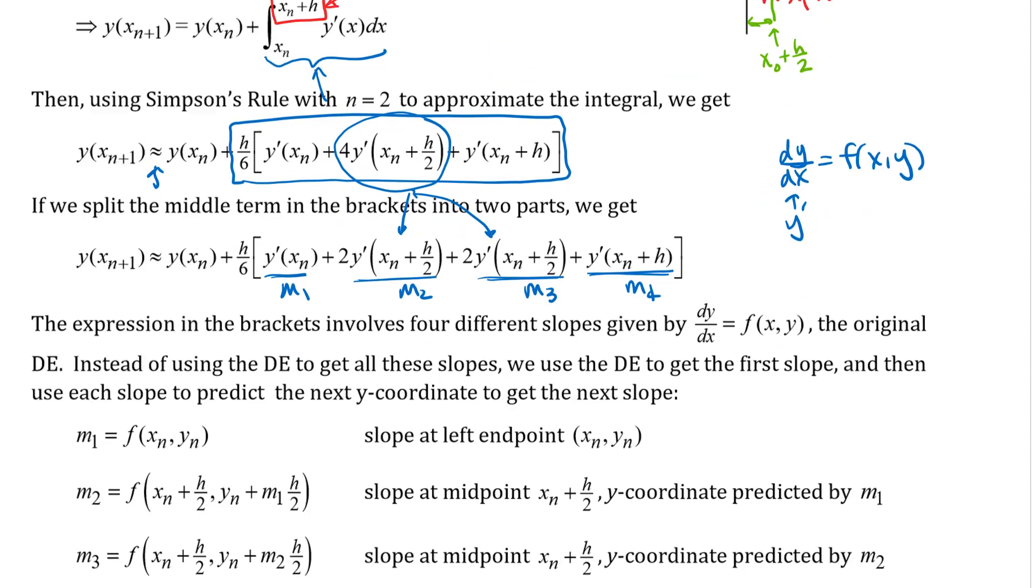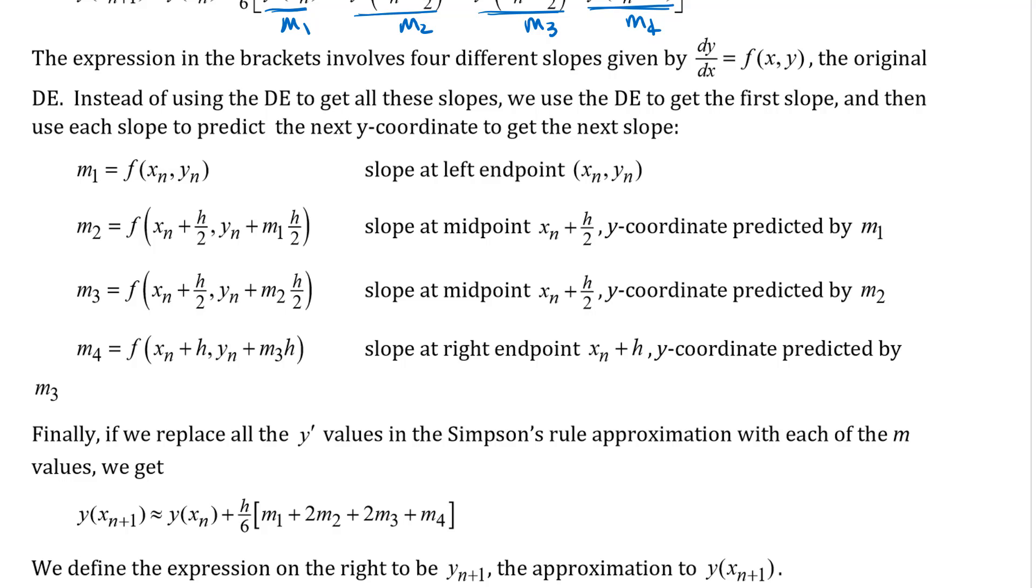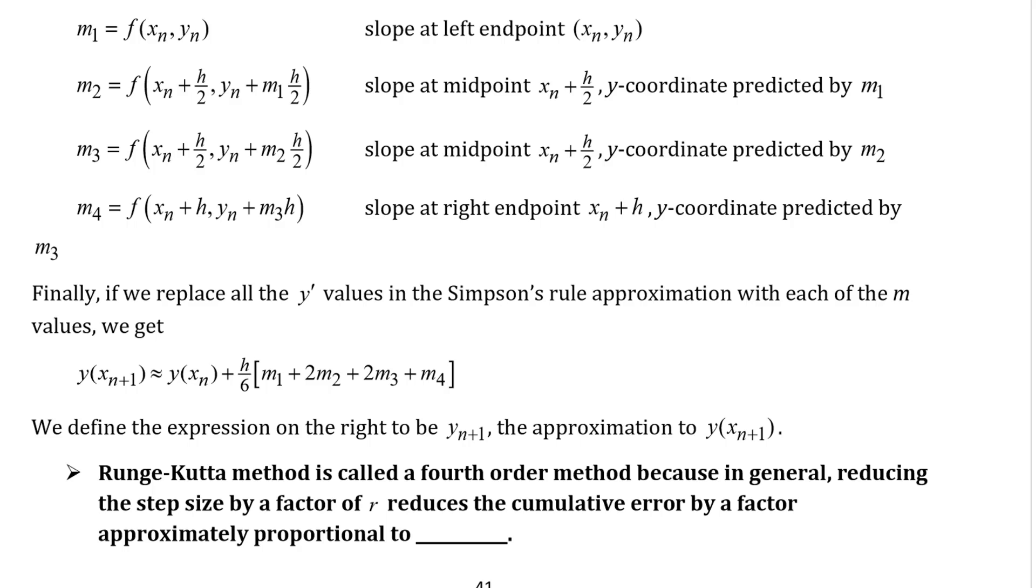Okay so what we see down here below is just some symbols associated with that so we've got slope at the left end point, slope at the midpoint with the y coordinate predicted by the first slope we were given, slope at the midpoint with the y coordinate predicted by the second slope, and slope at the right end point. Okay so if we replace all of those slopes in that Simpson's rule formula we get this formula that's right here. Notice that this part that I'm putting a box around here is a weighted average of four different slopes with these multiplying by two factors so that the middle slopes are weighted heavier but if I just think about this as that weighted average of four slopes and I call that my slope that I'm actually going to use then what I've got is basically the same kind of formula that we use for the other ones here.